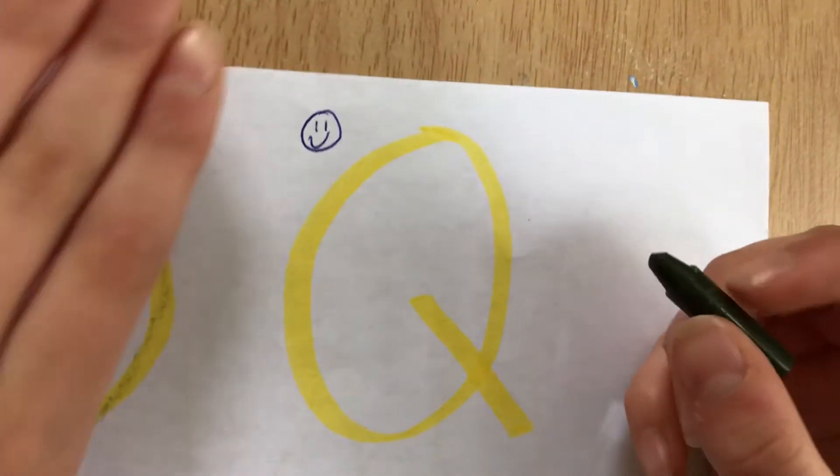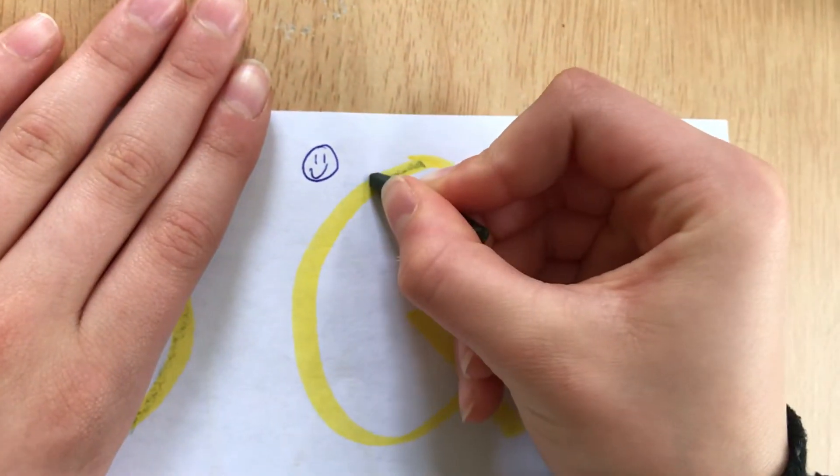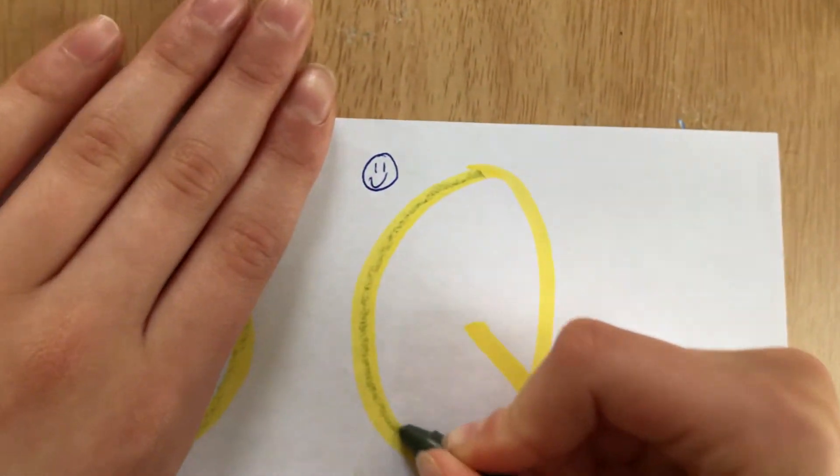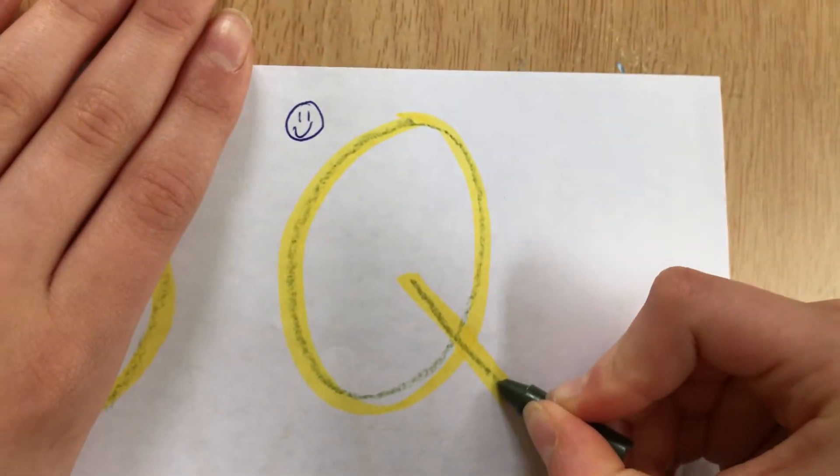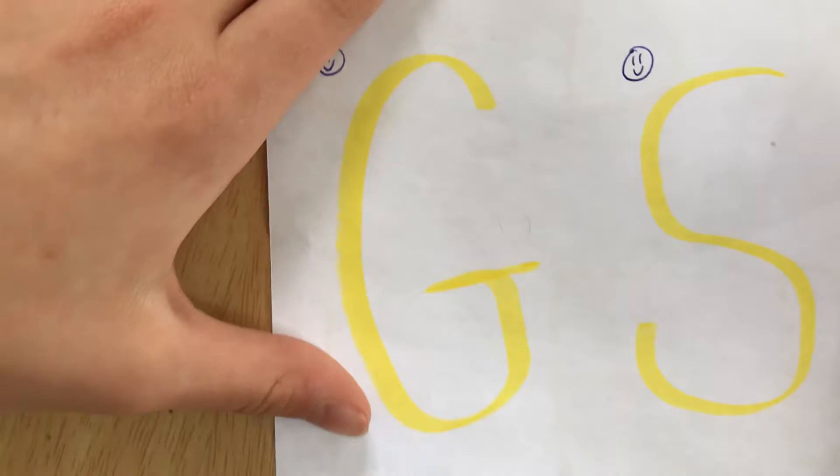Let's try Q. Magic C towards the smiley face into an O. Little line on diagonal.